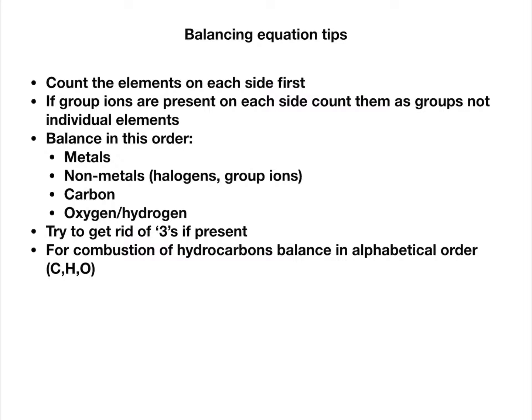When it comes to balancing, balance in the order of metals first, then non-metals, then carbon, oxygen, and hydrogen. If you have any threes present, it's best to try and get rid of these, usually by doubling, because most other things exist as singles or pairs.